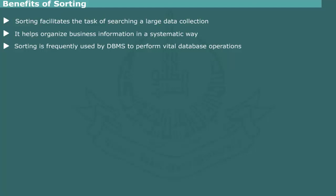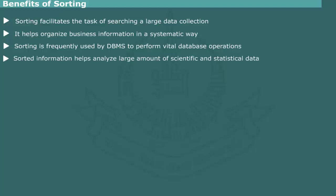Sorting, or indexing, is a vital operation supported by a database management system (DBMS). Much of the power of a DBMS stems from the ability to provide rapid sorting on multiple data fields. Finally, sorting helps analyze large amounts of scientific and statistical data. Sorting is also useful in recognizing patterns or identifying trends in time series.